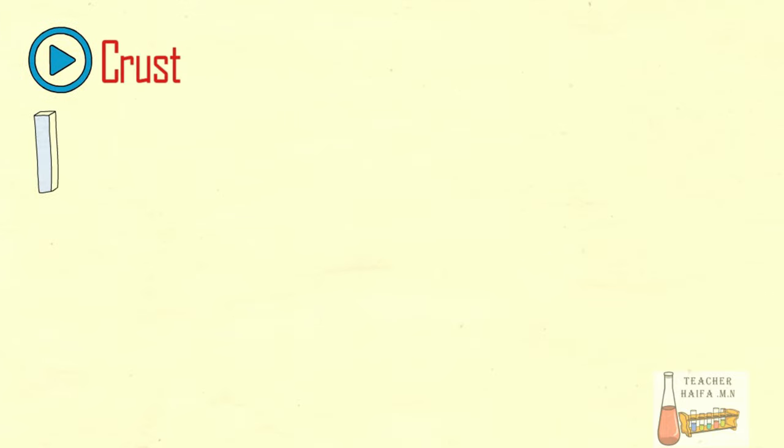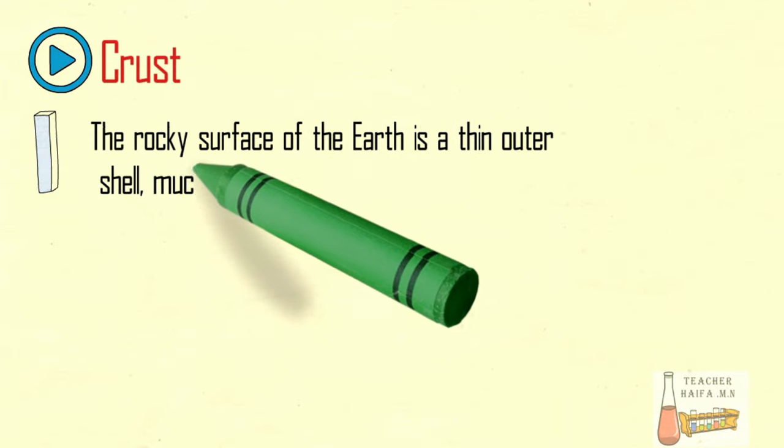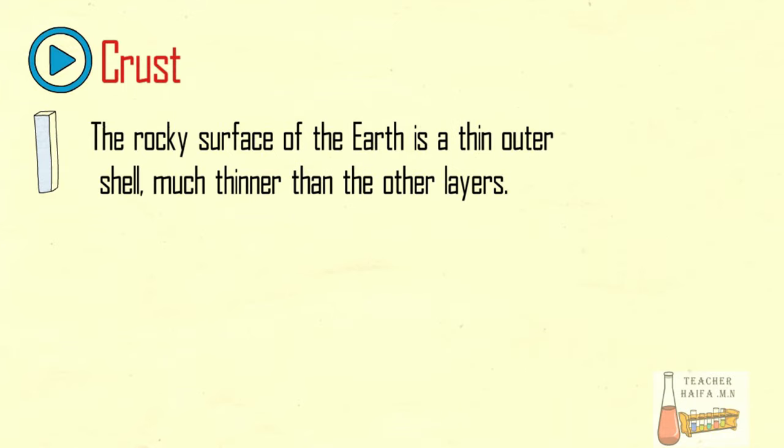Crust. The rocky surface of the Earth is a thin outer shell, much thinner than the other layers.